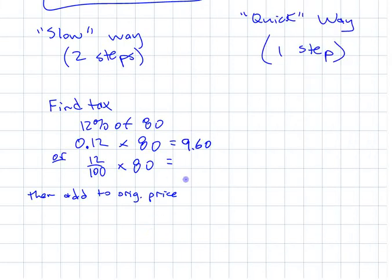Either way you do it, whether you do 12 divided by 100 because that's what 12% is, then you say 9.6 dollars plus 80 dollars is 89.60. Not that that's that hard. I'm not saying it's the slow way like it takes half an hour to figure it out. I just mean that it's two steps instead of one. First you have to find the tax, then you have to add it on.